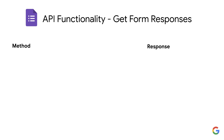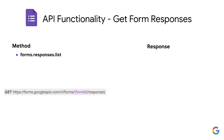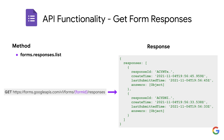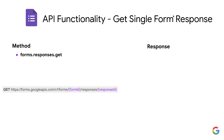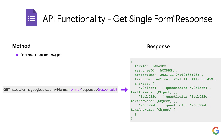To retrieve a list of responses, use the forms.responses.list method. It uses an HTTP GET with the requested form ID along with the trailing slash responses in the URL, and the response will contain the form responses. To retrieve a single form response, use the forms.responses.get method. It also uses an HTTP GET but with both the form ID and response ID in the request URL, and the response will contain the requested form response info.